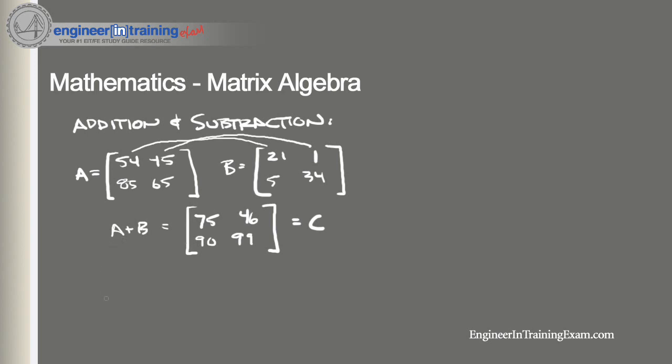Now what about subtraction? A minus B. Well, we're going to get a matrix. It has to have the same order. And all we need to do is subtract each corresponding element. So it's 54 minus 21, which gives us 33. 45 minus 1 is 44. 85 minus 5 is 80. And 65 minus 34 is 31. So now that's C or D or whatever letter you want.